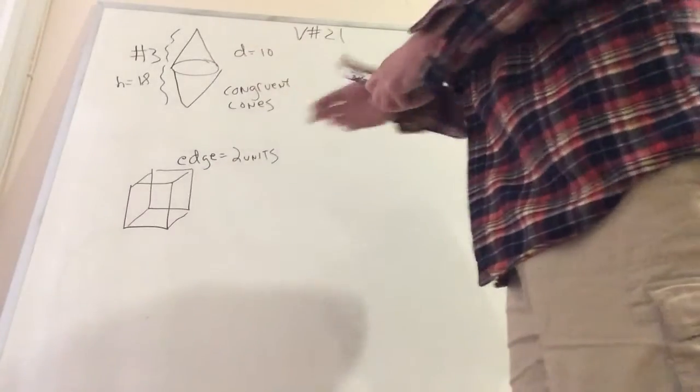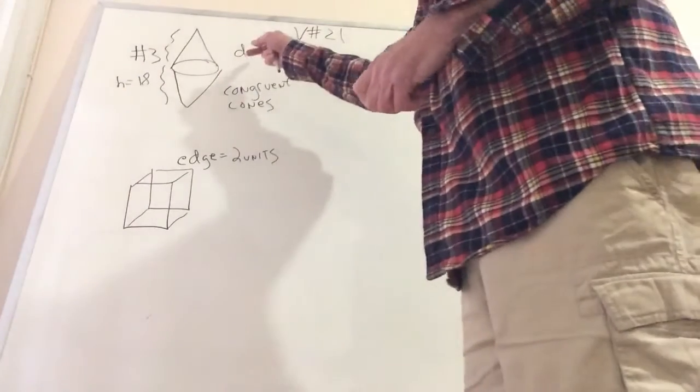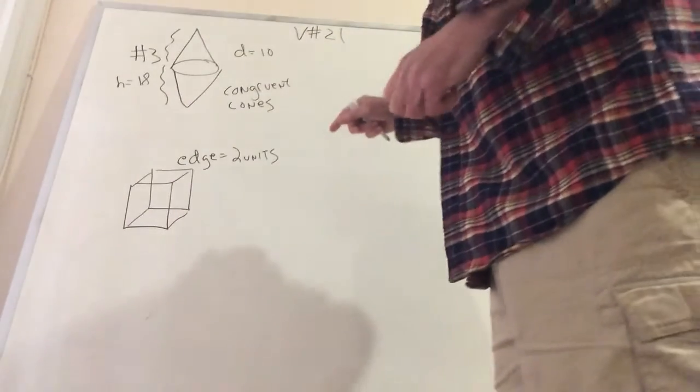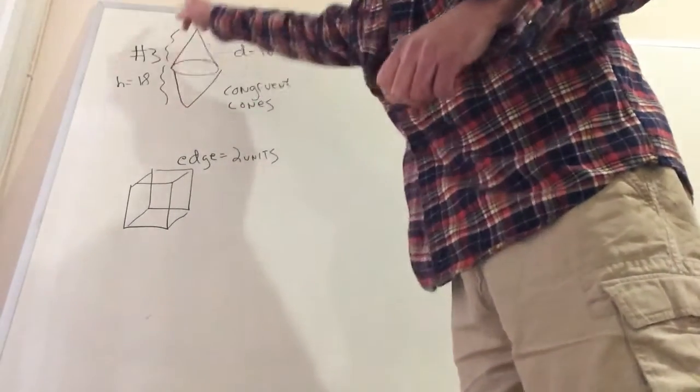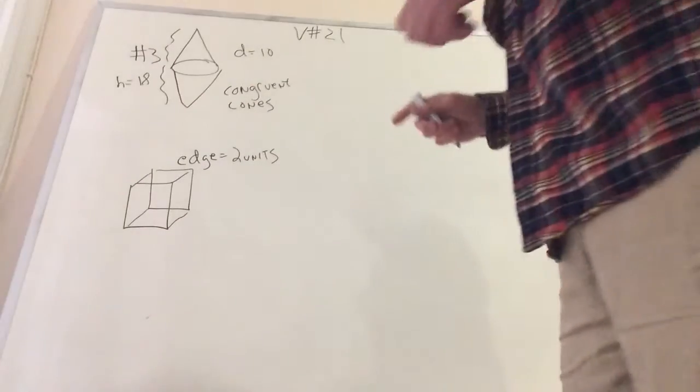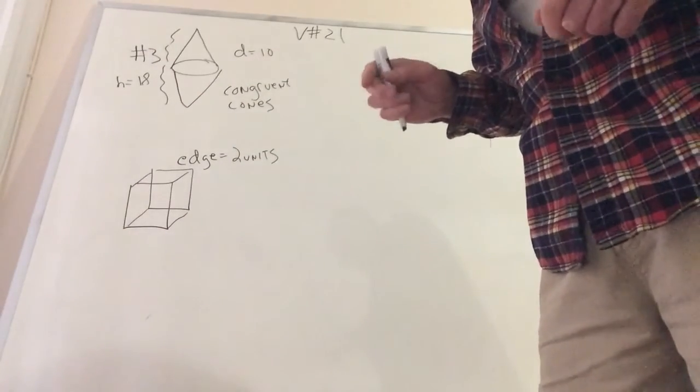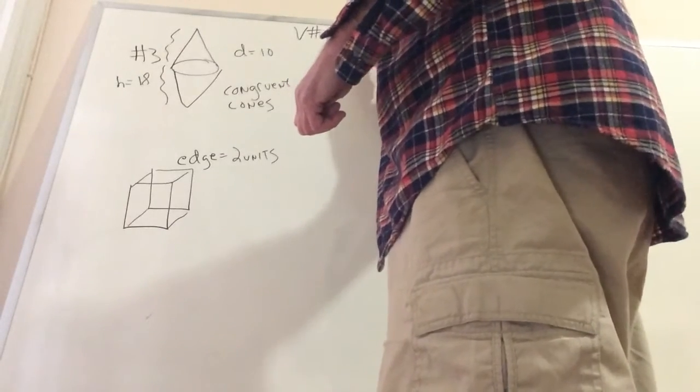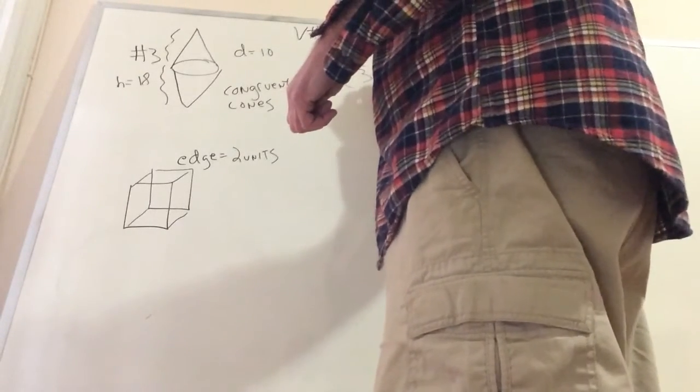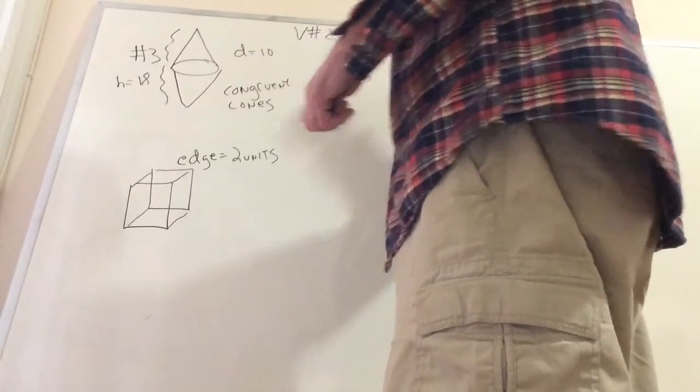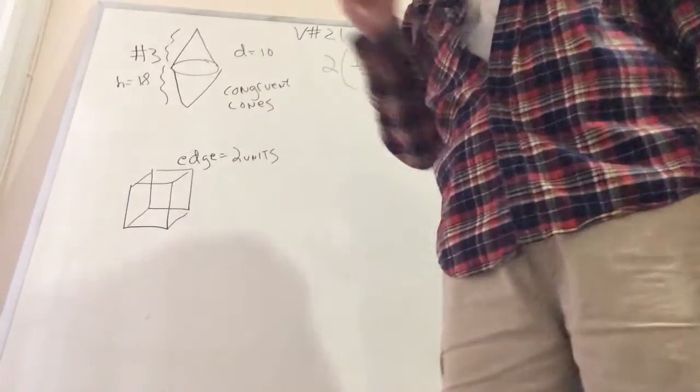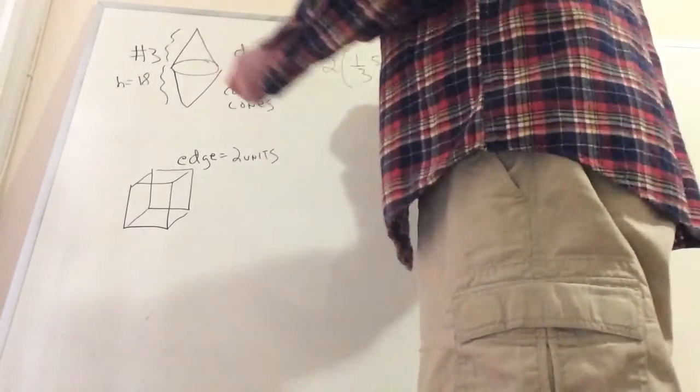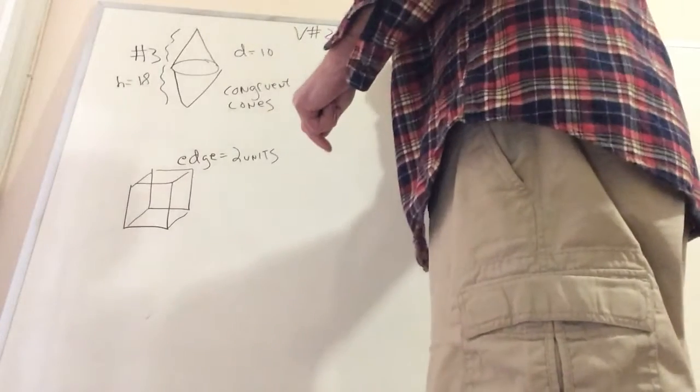We have two congruent cones sharing the same radius, the same circle here, the same base if you like, and the diameter is 10 and the height of the whole figure is 18. So all I have to do is figure out what the volume is. So there are two of these guys, since they're congruent, and it's one third. Careful, and this is probably the mistake that the other person who sent me the letter made.